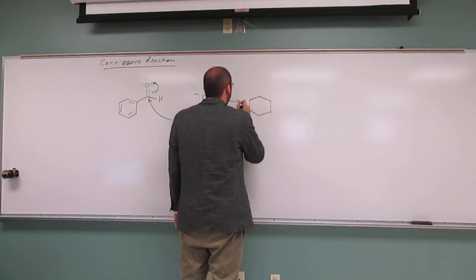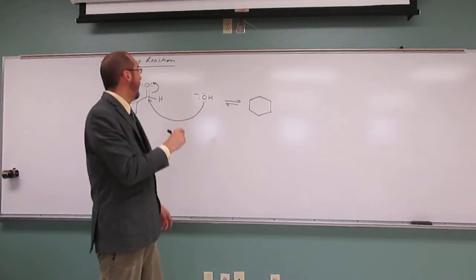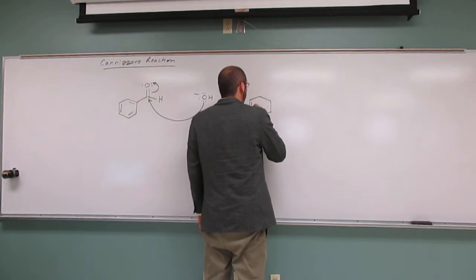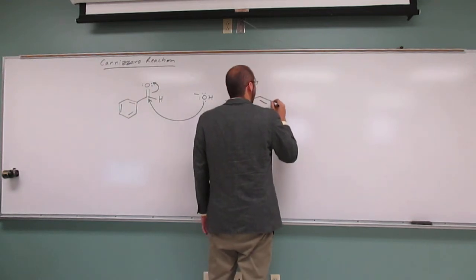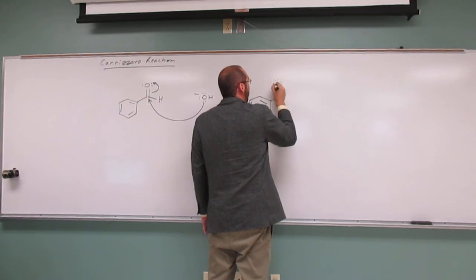That's going to cause these electrons to go up to the carbonyl oxygen. And this reaction, like we were just saying, really can go back and forth because the OH can be the leaving group back. But what happens in the Cannizzaro reaction, as you might have already figured out, something weird is happening here.